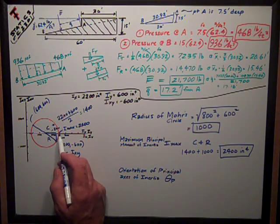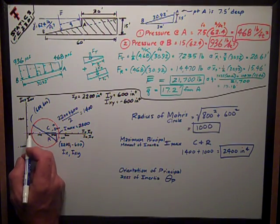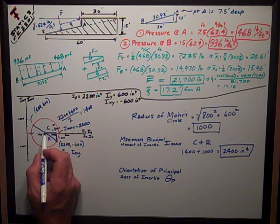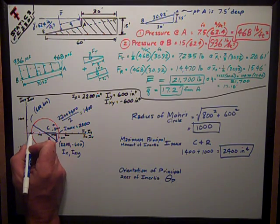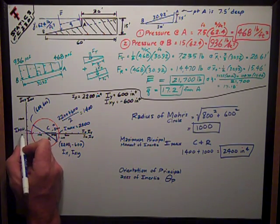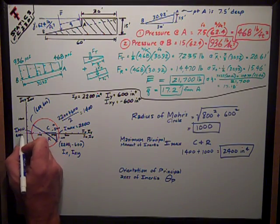Note that at my maximum, my minimum is over here. It wasn't asked for it, but it's just the center minus the radius. The center of 1,400 minus 1,000 makes my I minimum 400.